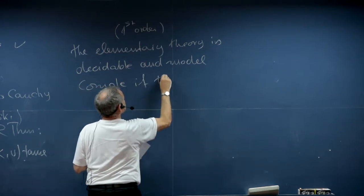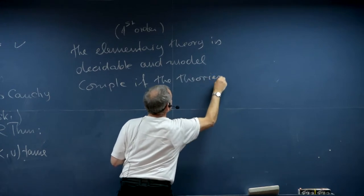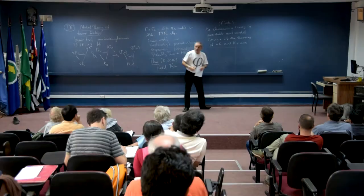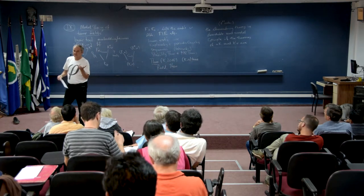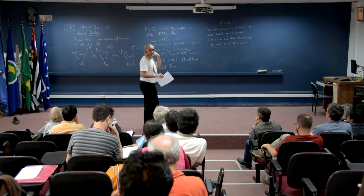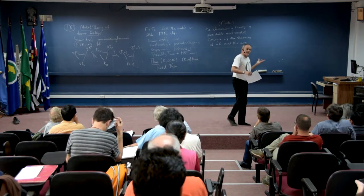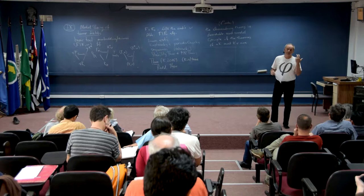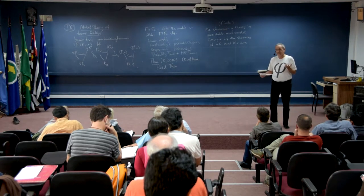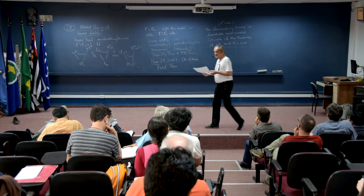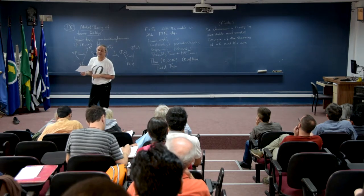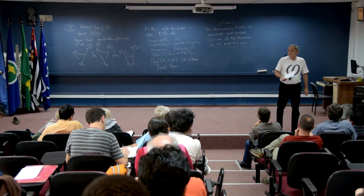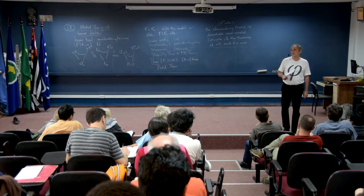First-order, or elementary, means you have a certain language. For a field: plus, minus, times. For a valued field you add a predicate for the valuation ring. The sentences you are allowed to form use quantification only over elements of the field, not over subsets — so you cannot express, for instance, that a valued field is complete; that's second order. But elementary does not mean easy: Fermat's last theorem is elementary, but the proof is not. For residue fields, just the language of rings; for the value group, the language of ordered groups with plus, minus, a constant zero, and a predicate for the order.